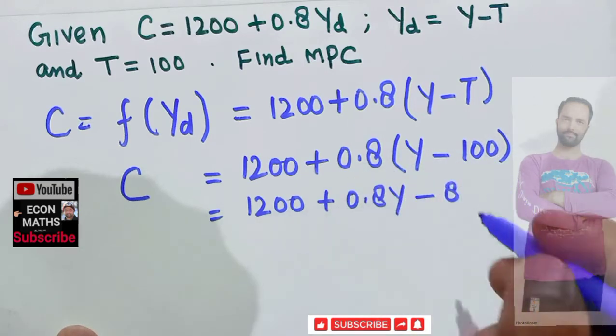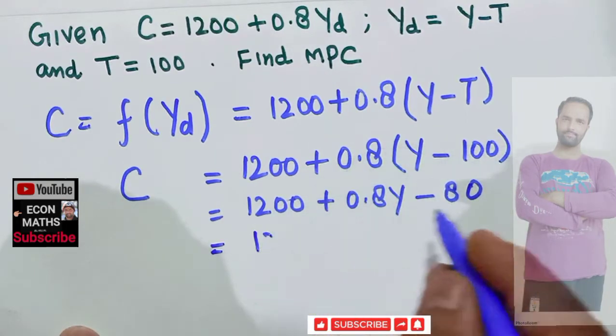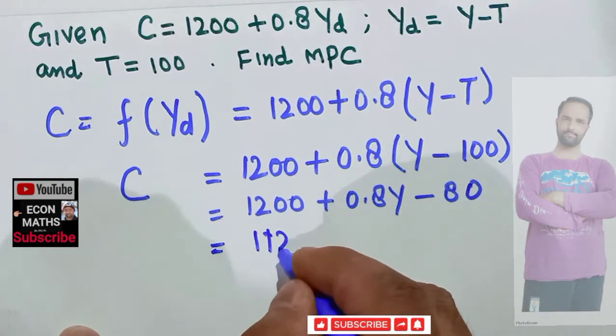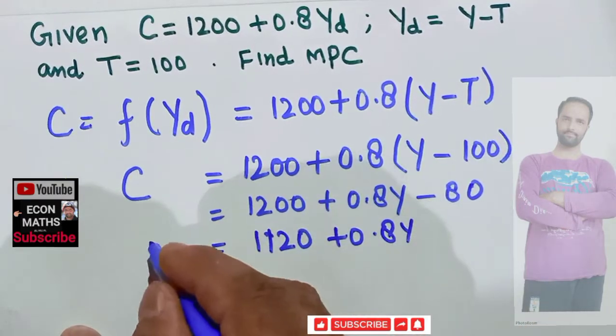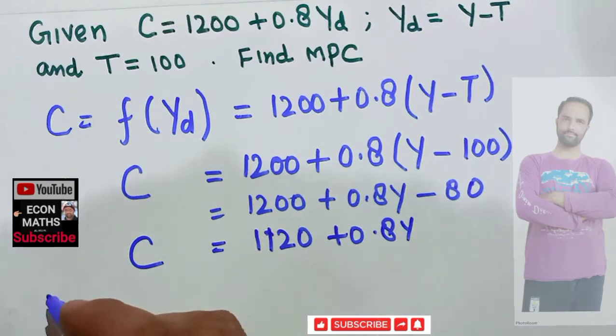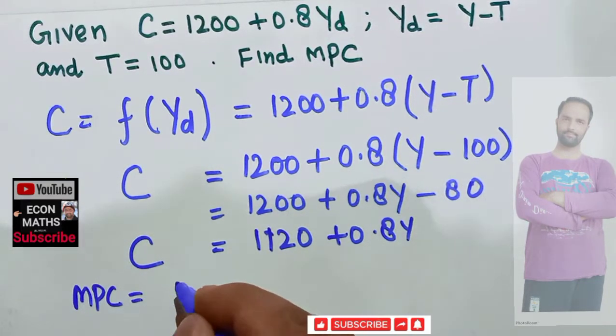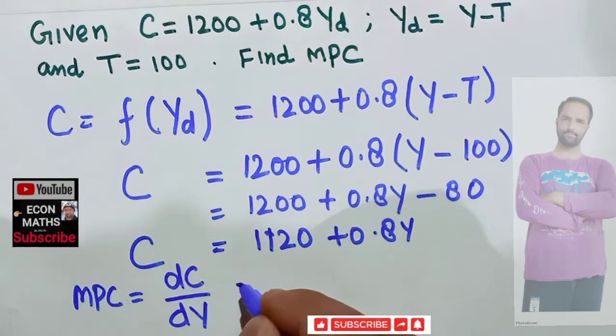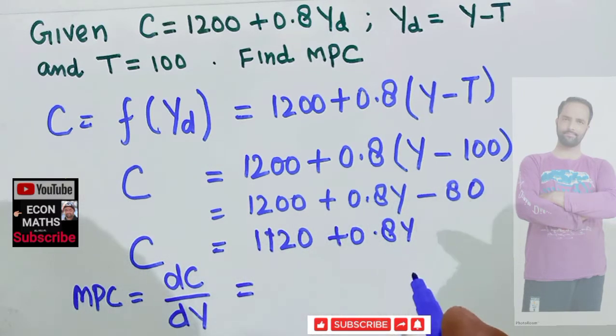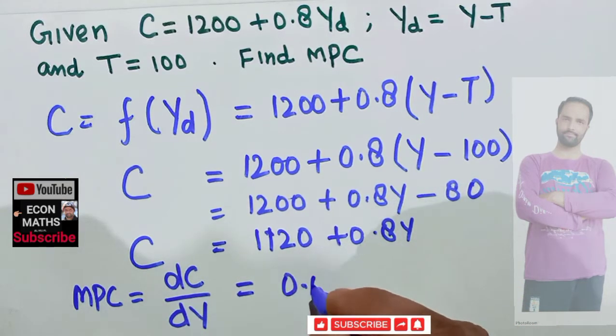This result, 1200 minus 80, comes out to be 1120 plus 0.8Y. This is our consumption function. Now MPC, marginal propensity to consume, is simply derivative of consumption function with respect to income. If I take derivative of this function with respect to Y, derivative of constant is 0, derivative of Y is 1, so we are left with 0.8. So our marginal propensity to consume will be 0.8.